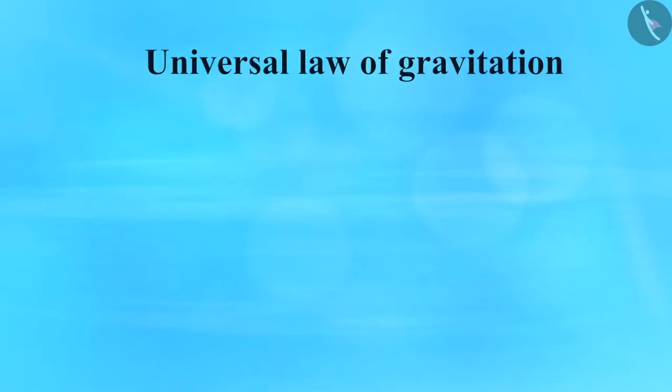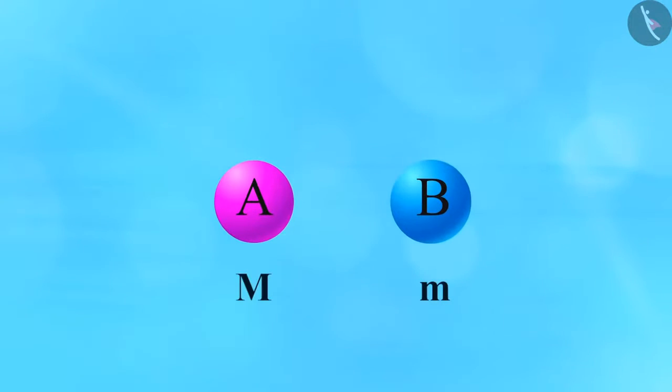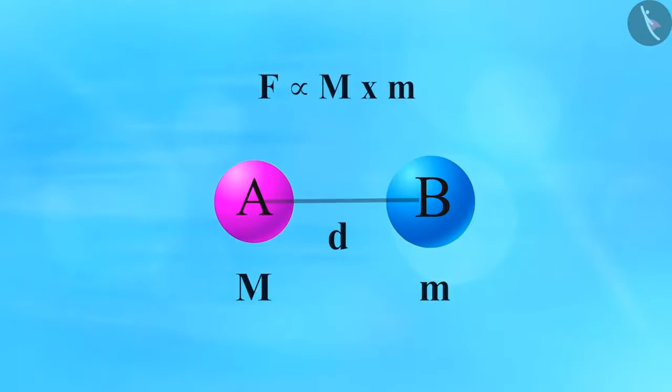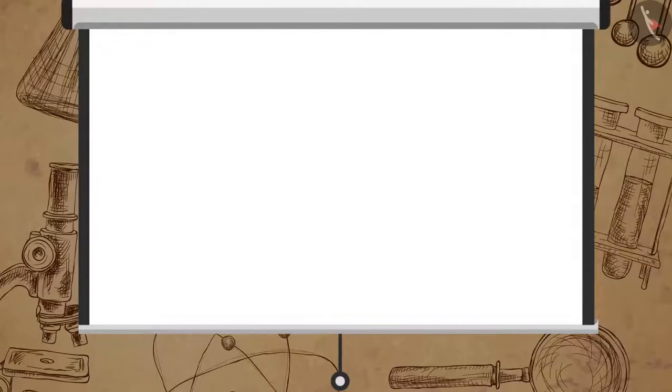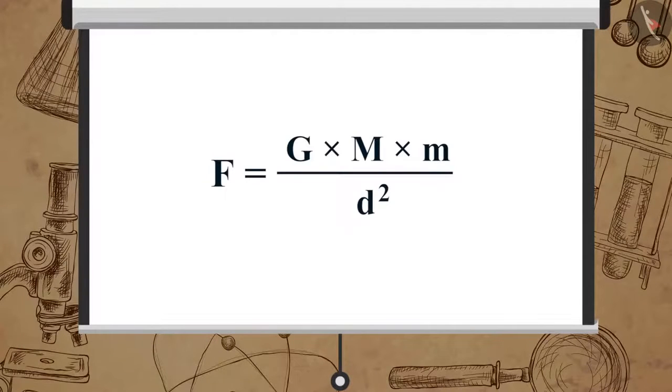The universal law of gravitation states that the force between two objects in the universe is directly proportional to the product of their masses and inversely proportional to the square of the distance between them. The force is directed along the line joining the center of two objects. Mathematically it is written as F is equal to G multiplied by M multiplied by m upon d square.